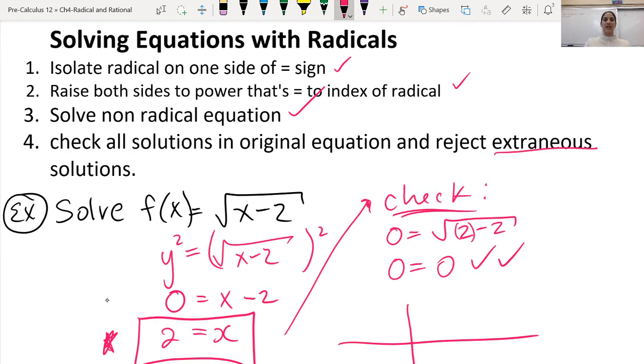We know that a normal root x graph looks like this in its most basic form, but this is not normal. This has been transformed. It says root x minus 2. We know that that shifts at 2 to the right, according to our first chapter that we did on transformation.